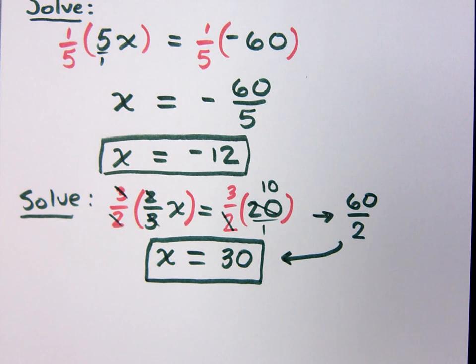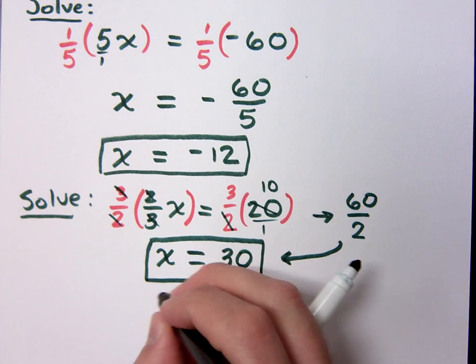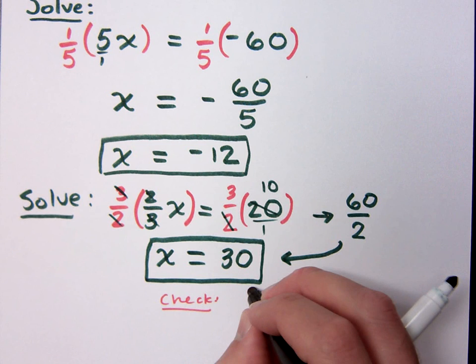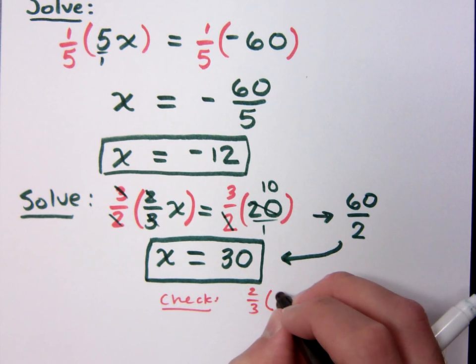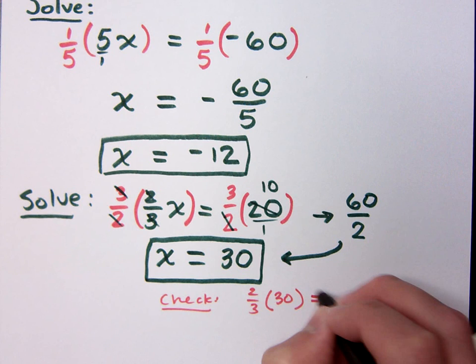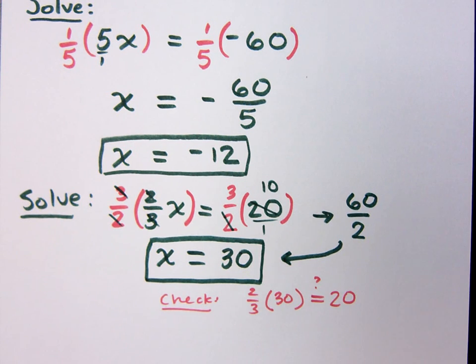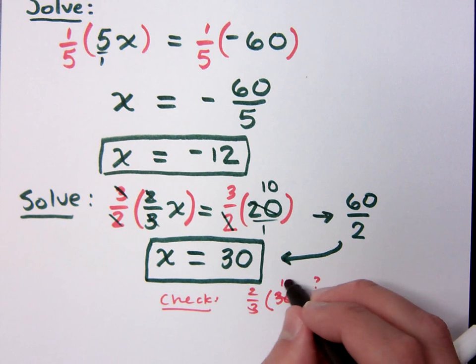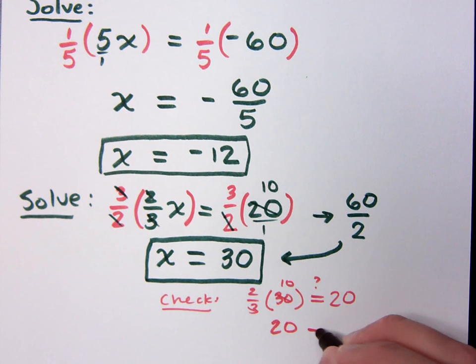Now, how do you check these answers? How do you check your solutions? Yeah, you plug it back into the original. So if you were to check this, it shouldn't take much effort to do that. I've got two thirds replacing the x with my proposed solution of 30. And I want to see, does that equal 20? Well, you see here that 3 goes into 30 ten times. And so, yes, 20 is equal to 20. Do you all agree?